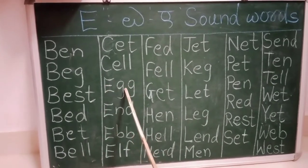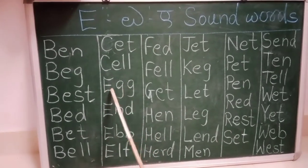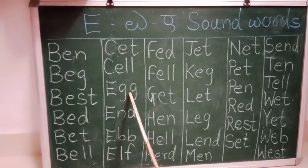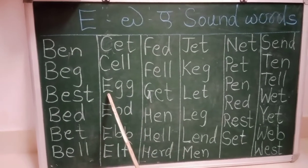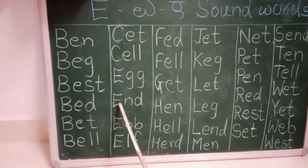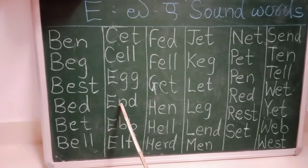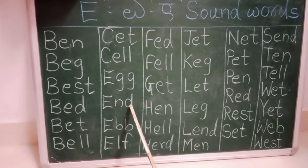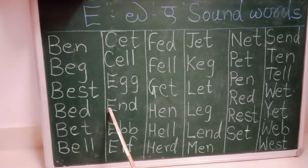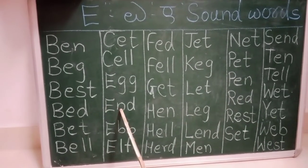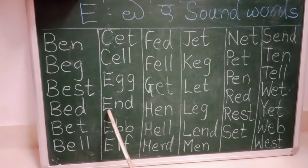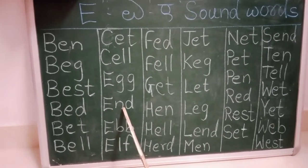E-G-G, E-G-G. Egg. E-double G, Egg. E-N-D, E-N-D, End. E-N-D, End.